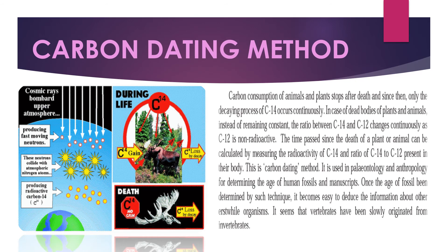Carbon consumption of animals and plants stops after death, and only the decaying process of C14 (carbon-14) occurs. Cosmic rays bombard the upper atmosphere and neutrons collide with nitrogen atoms, producing radioactive carbon-14 atoms. During life, plants and animals gain C14, but when they die, their bodies decay and C14 is lost — resulting in no gain but loss of C14 by decay.